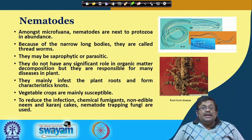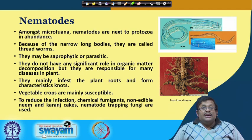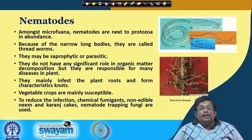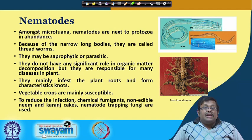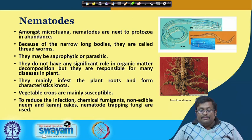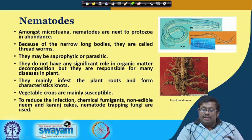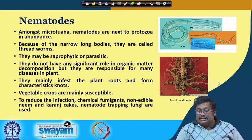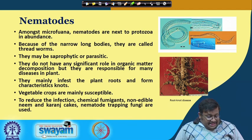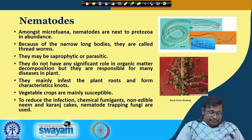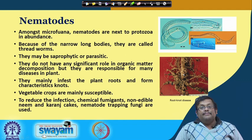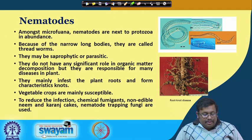The next important micro fauna are nematodes. They are next to protozoa in abundance, and because of their narrow long bodies they are also called thread worms. They may be saprophytic or parasitic in nature. They do not have any significant role in organic matter decomposition, but are responsible for many diseases in plants. One of the major plant diseases caused by nematodes is root knot disease — they infest plant roots and form characteristic knots. Vegetable crops are mainly susceptible. To reduce infection, chemical fumigants, neem and karanj cakes, and nematode-trapping fungi are used.